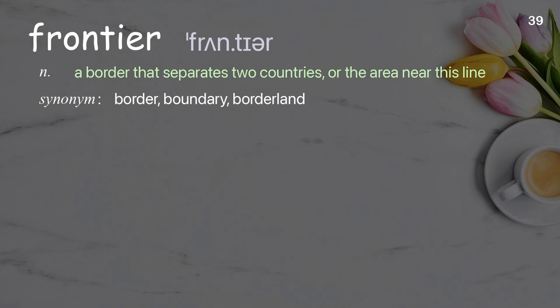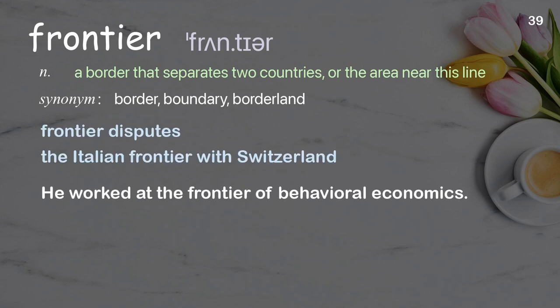Frontier. A border that separates two countries or the area near this line. Examples: frontier disputes, the Italian frontier was Switzerland. He worked at the frontier of behavioral economics.